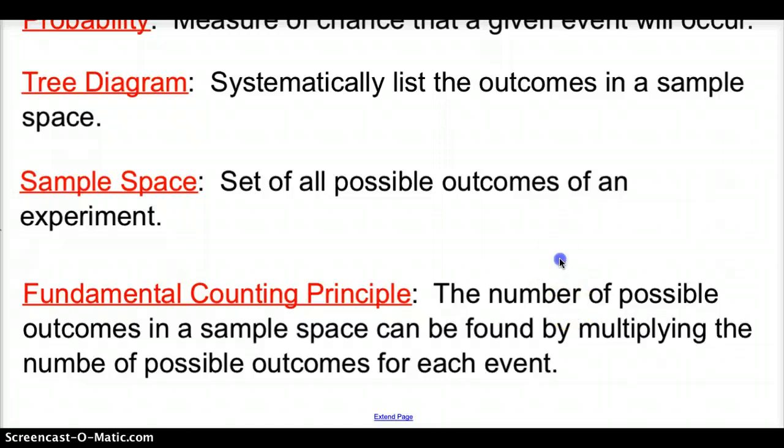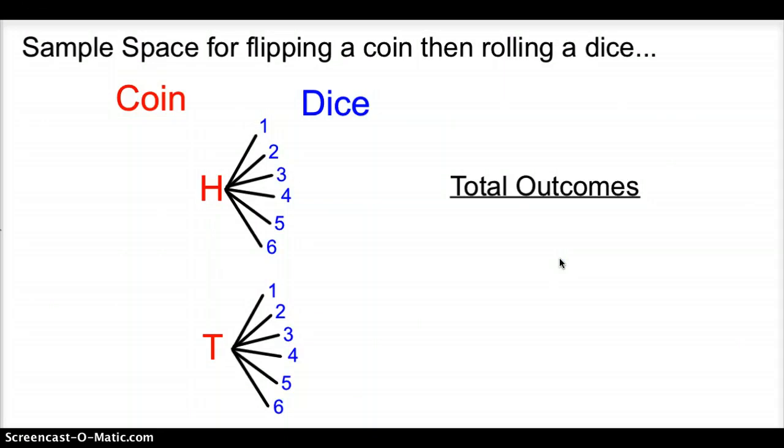Let's go ahead and get into what a tree diagram is. This would be a tree diagram right here. This also shows the sample space for flipping a coin and then rolling a dice. Here are my outcomes for flipping a coin. Here are my outcomes for rolling a dice. How many outcomes do I have for flipping a coin? I have two. How many outcomes do I possibly have for rolling a dice? I have six. Now, the fundamental counting principle tells us that we find the total amount of outcomes by multiplying these two numbers together.